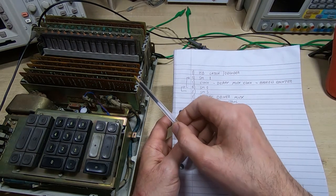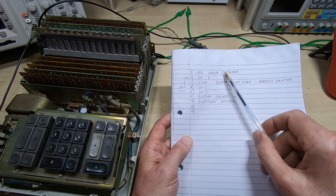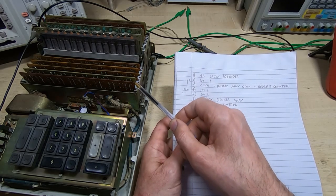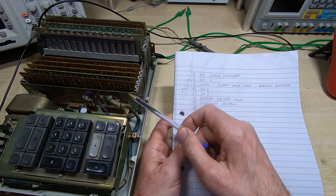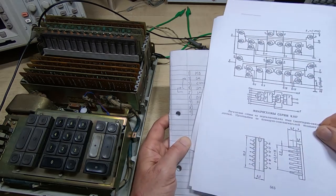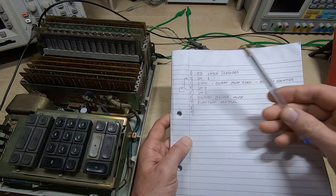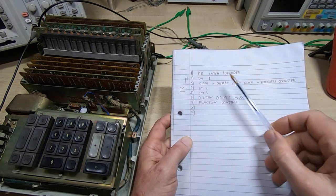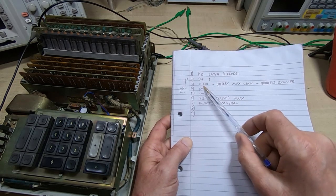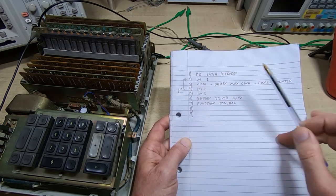I got as far as figuring out what some of the boards did. Board one, they're numbered from the front, and board one is the keyboard latch and decoder. I figured that out because the inputs to it come straight from the keyboard and the devices on there were RS latches.